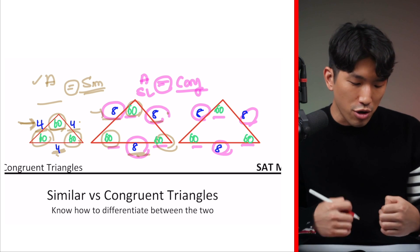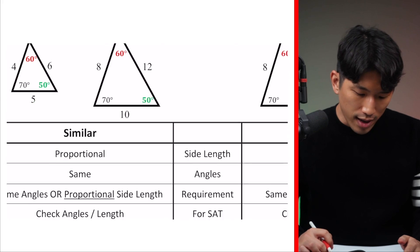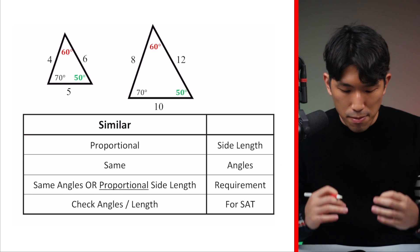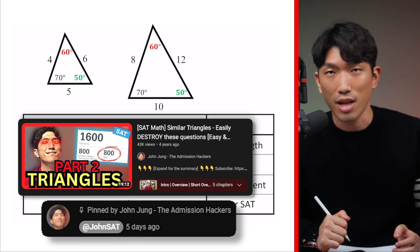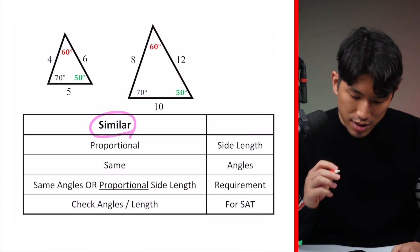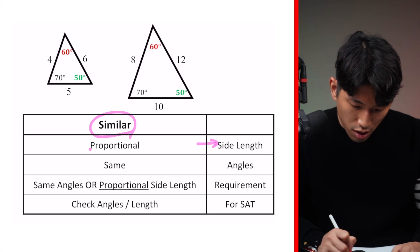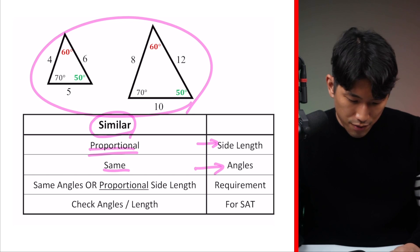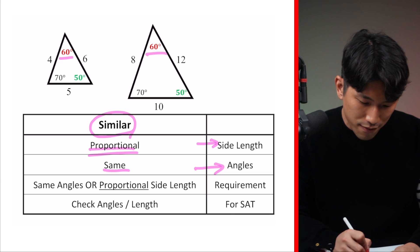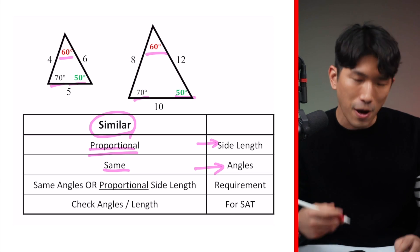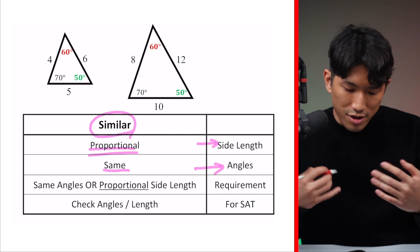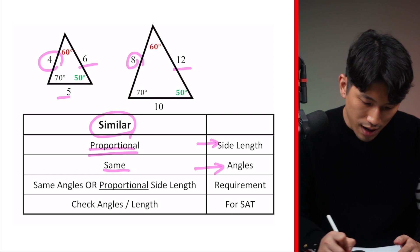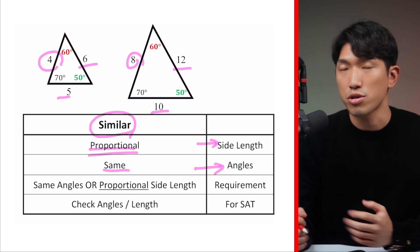When it comes to similar triangles for the SAT, two triangles are considered similar when their side lengths are proportional and they have the same set of angles. For example, these two triangles have angles of 60, 70, and 50 degrees each, but their side lengths are proportional: 4 and 8, 6 and 12, 5 and 10 — all times 2. They're not the same size, but they are proportional. I went in depth on this concept in a separate video, linked in the comments below.